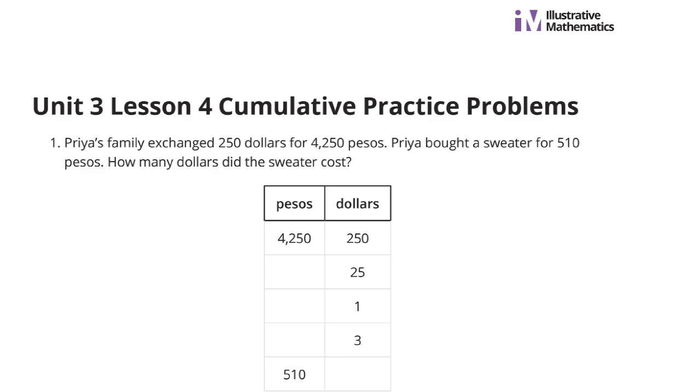So we can ask ourselves, how do we get from 250 to 25? Well, let's divide by 10. And so I can take 4,250 and divide by 10 to get 425 pesos for the $25.